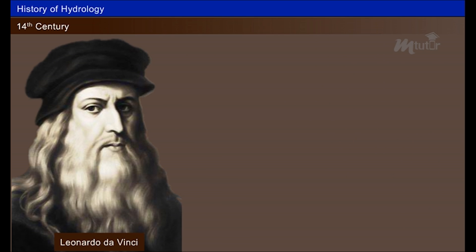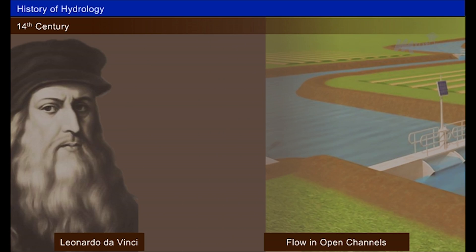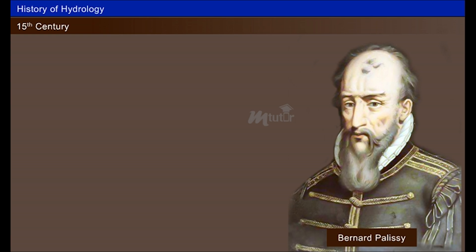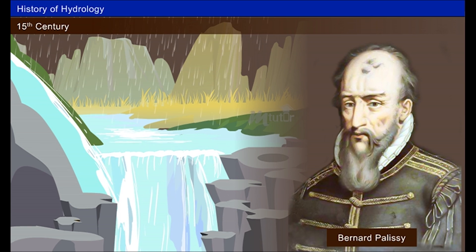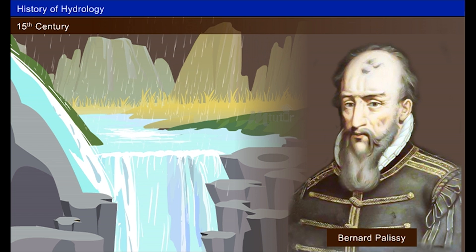In the late 14th century, Leonardo da Vinci was the first person to state about the principles behind the flow in open channels. Bernard Palissy stated that rainfall was the only source of water for rivers and springs during the 15th century.